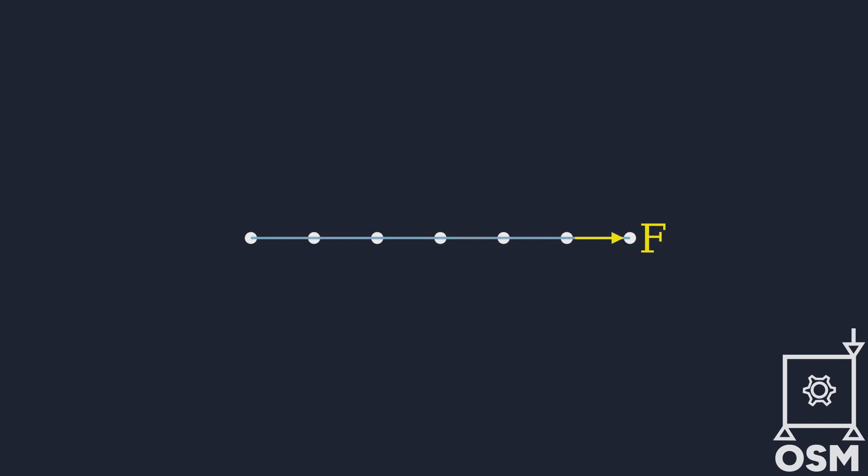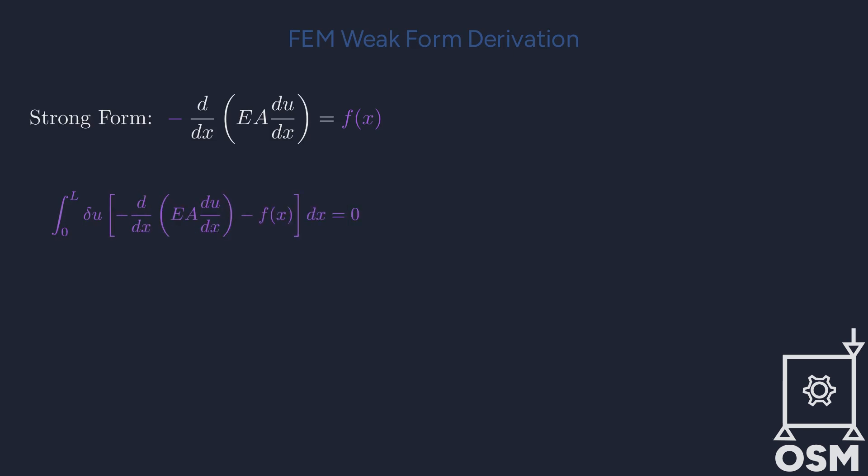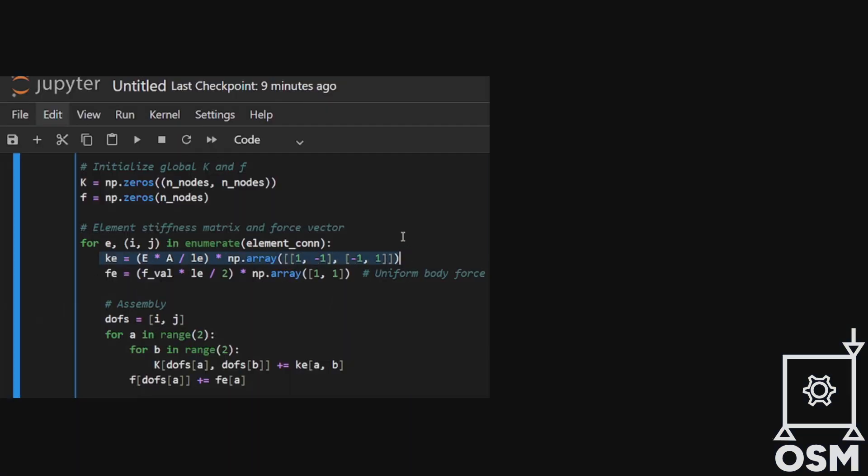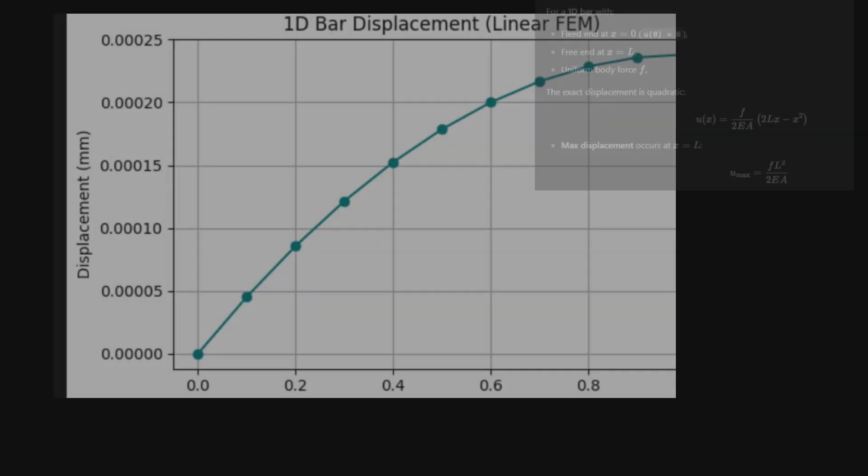Where did the finite element method come from? It is not just a simulation tool, it is a powerful transformation of physics into solvable equations. Let's break it down and derive the weak form, step by step.